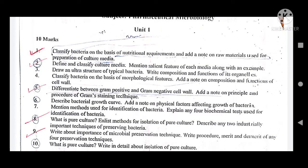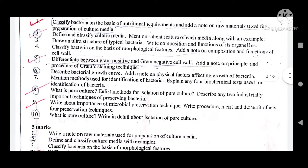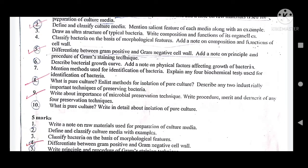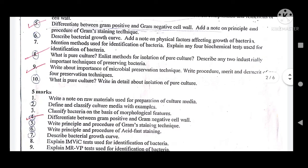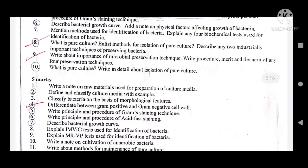For the fourth question on morphological features, write the composition and functions of the cell wall, then differentiate between gram-positive and gram-negative cell walls — this is very important. Add a note on the principle of gram staining technique. The sixth question: describe the bacterial growth curve — a very important question with a 90% chance of appearing — and add a note on physical factors affecting growth of bacteria.